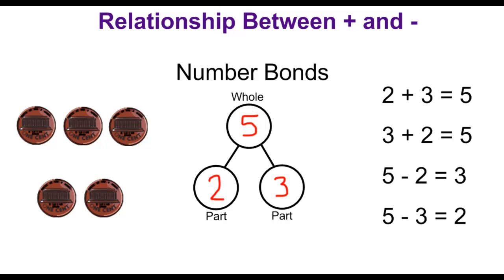What the students will do from here is take it to the abstract level, or actually write a mathematical sentence. For example, students could write two plus three equals five, or part plus part equals whole. Similarly, we have three plus two equals five. This process helps students see the relationship between addition and subtraction as well.